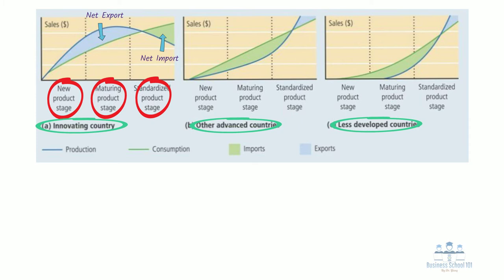Vernon's theory suggests that early in a product's lifecycle, all the parts and labor associated with that product come from the area where it was invented. After the product is adopted and used in the global market, production gradually moves away from the point of origin. In some situations, the product becomes an item that is imported by its original country of invention. Let's discuss each of these stages separately.